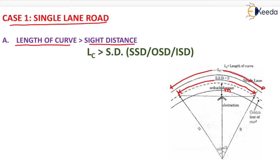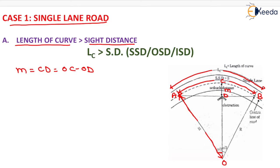We name this figure O, A, C, D, where this distance is D. Setback distance M will be equal to CD, and CD will be equal to OC minus OD. The value of OC and OD is taken up to the centerline of the curve. The distance is known as radius of the curve R, and the angles are known as alpha by 2 on each side, with the obstruction shown on the inner side.